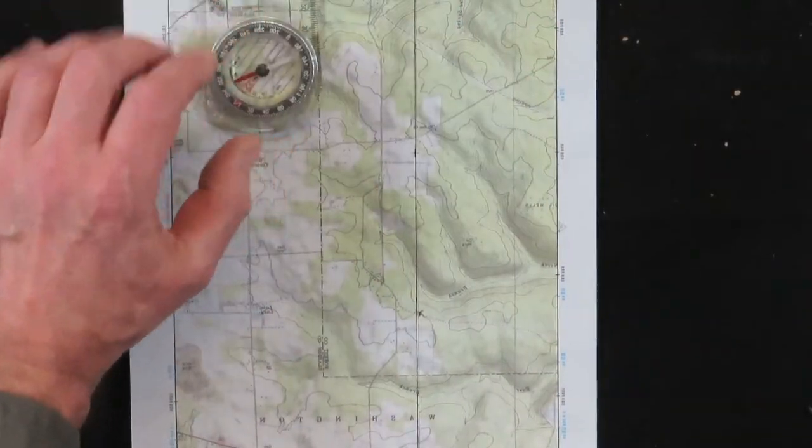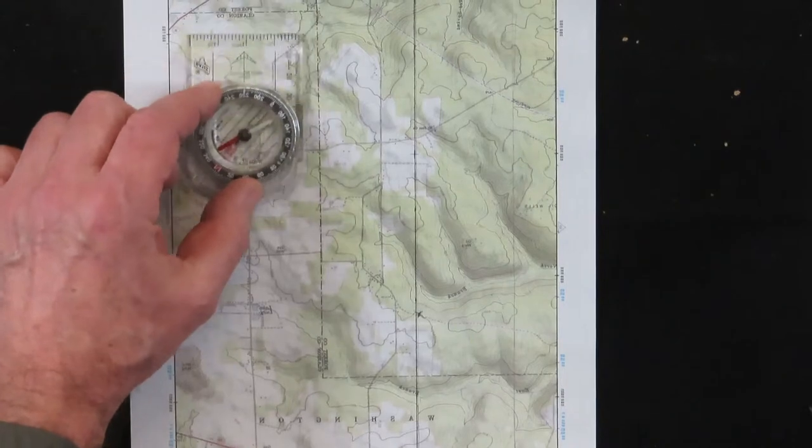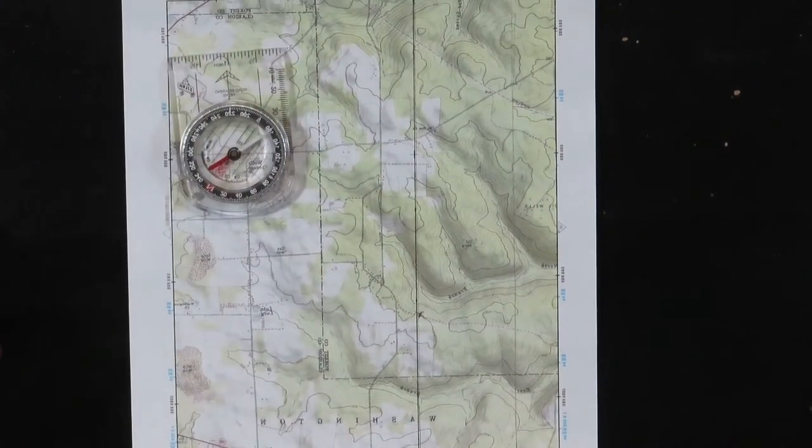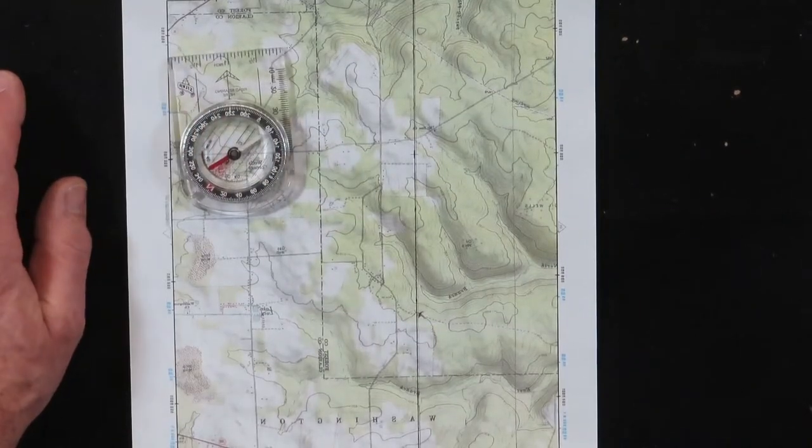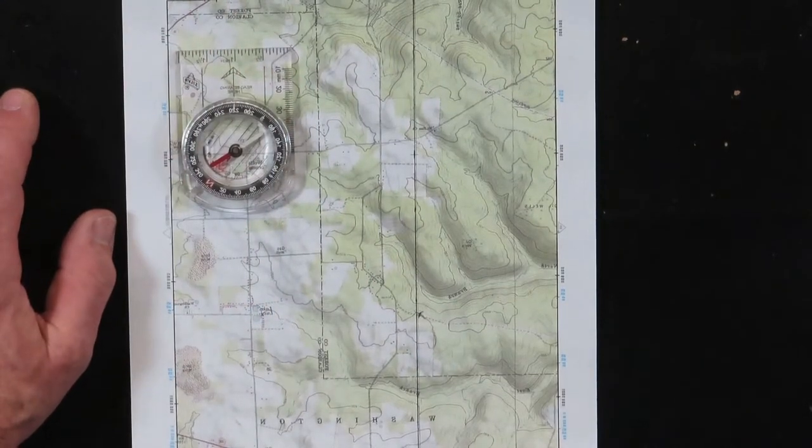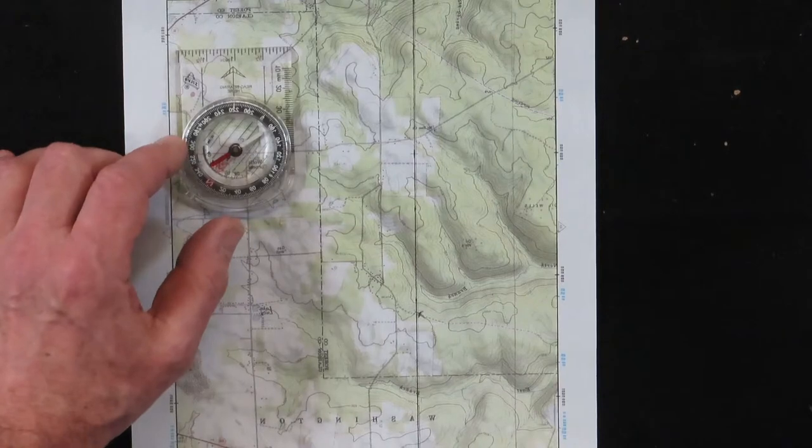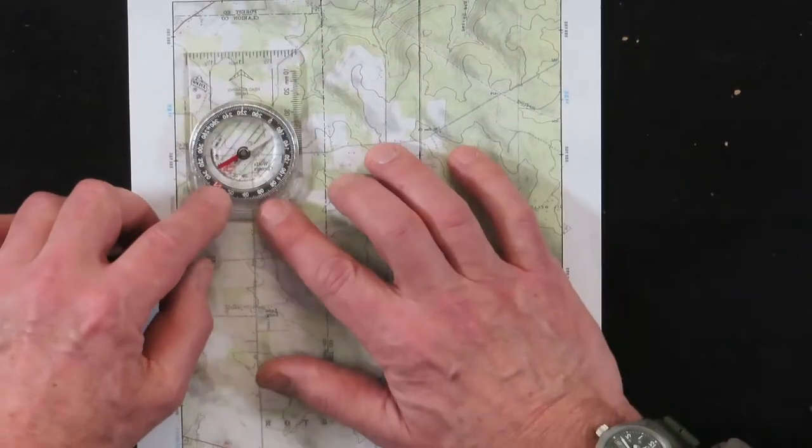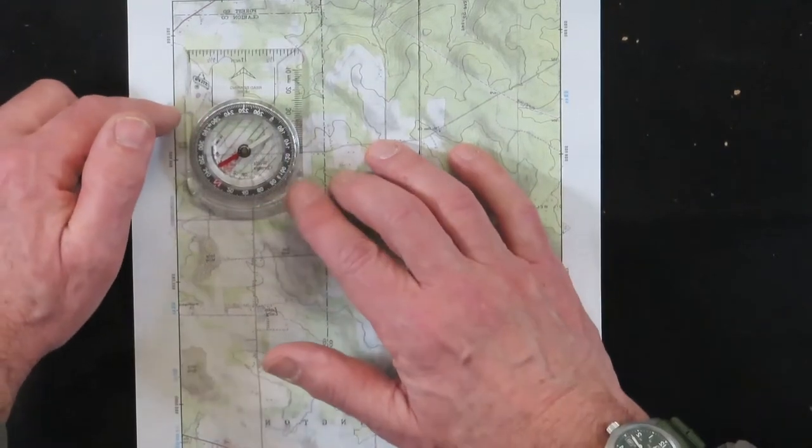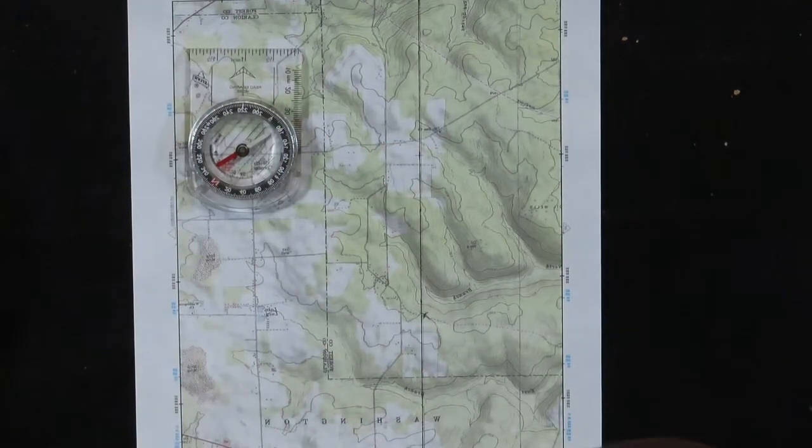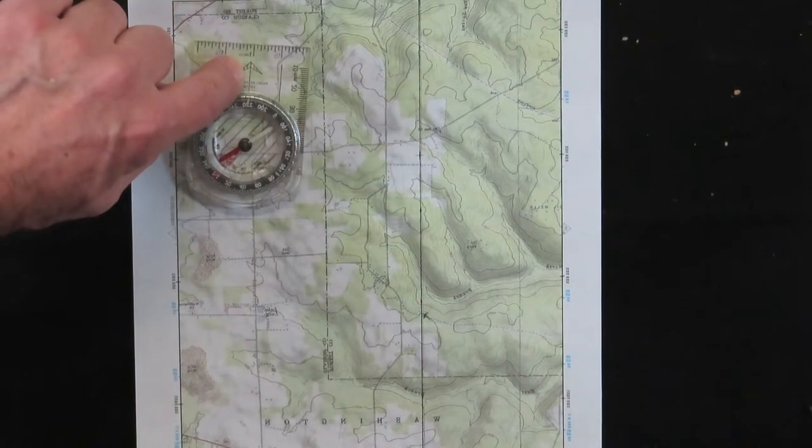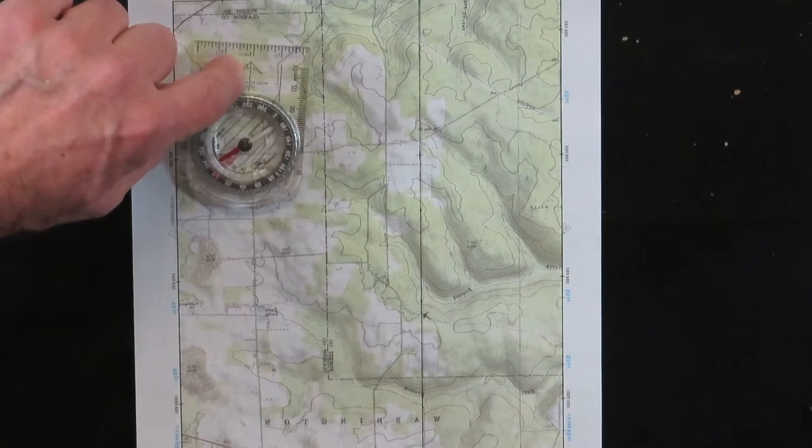We have a compass and this is a baseplate compass. You get that name because it has the base plate here. There's a lot of numbers on it, a lot of different markings, but basically what we're going to talk about are the cardinal points of the compass, which is your north, south, west and east. They're marked, they're kind of small on this. And then you have your arrow here that's imprinted on the base plate and that's your direction of travel arrow.